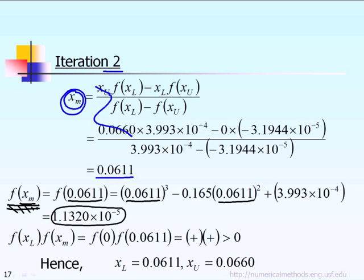Then after that, just like before, in the previous iteration, we want to find out what happened to this product, FXL times FXM. Well, FXL means the function at 0, and FXM means the function at 0.0611. Based on our calculation, we know the function at 0 is positive, and the function at 0.0611 is also positive. And therefore, the product will be positive.